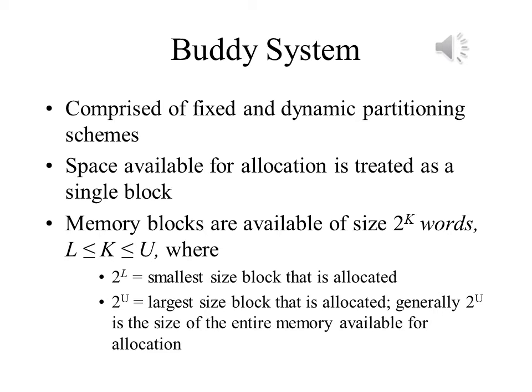Otherwise, the block is split into two equal buddies of size 2^(u-1). If 2^(u-2) is less than or equal to s times 2^(u-1), then the request is allocated to one of the two buddies. Otherwise, one of the buddies is split in half again. This process continues until the smallest block greater than or equal to s is generated and allocated to the request.